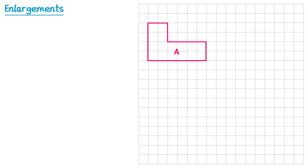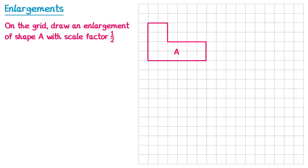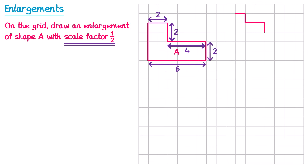Now let's try scale factor one half. This means all of the lengths need to be half as big. The top edge is 2 squares, and half of 2 is 1, so we draw one square. The next edge is also 2 squares, giving 1. The next is 4 squares and half of 4 is 2, so we go across 2. Then 2 squares gives 1 down, and the bottom edge is 6 squares so half of 6 is 3. This will be a shape enlarged by scale factor one half — all of the lengths are half as long.